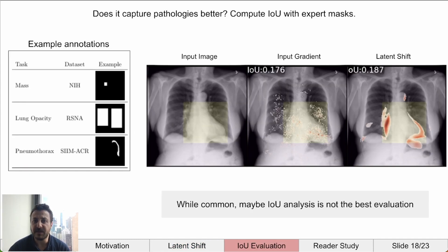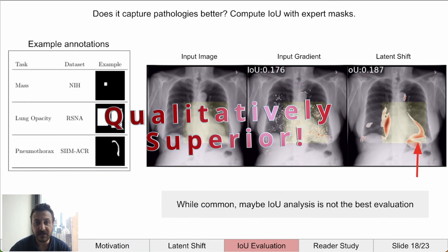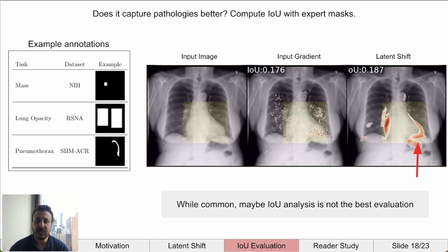Evaluating how well this method captures pathologies is difficult for a variety of reasons. For many pathologies, there are expert bounding boxes and segmentations available. An example shows the intersection over union computed between the 2D attribution maps and a bounding box for an enlarged heart. We can see that although the latent shift approach looks better in how it highlights around the heart, they have about the same IOU. We potentially need to rethink what annotations to collect in order to evaluate counterfactuals, as a bounding box or binary segmentation may not correctly capture what we expect to change. For example, we don't expect the entire heart to be removed.